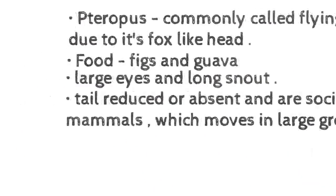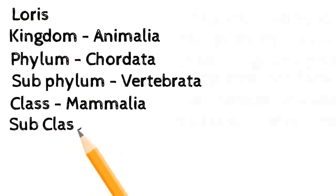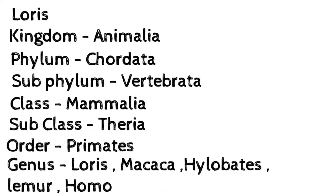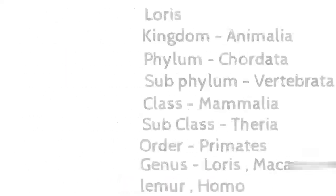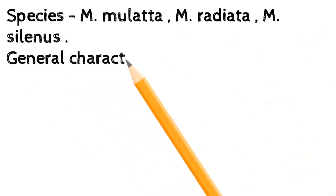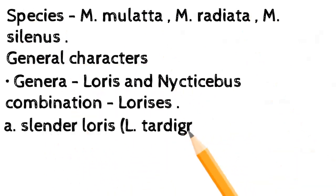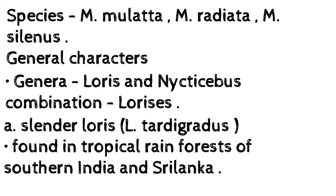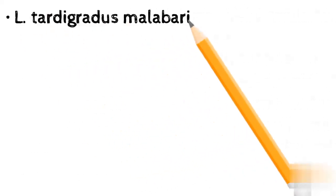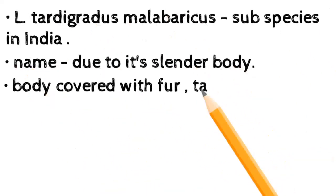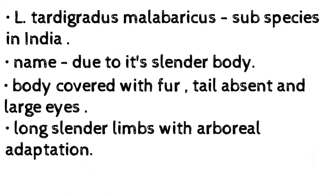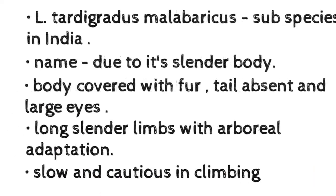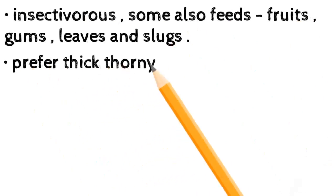Loris — Kingdom: Animalia; Phylum: Chordata; Sub-phylum: Vertebrata; Class: Mammalia; Sub-class: Theria; Order: Primates; Genera include Loris, Macaca, Hylobates, Lemur, Homo. Genera Loris and Nycticebus. Slender loris, Loris tardigradus, found in tropical rain forests of southern India and Sri Lanka; subspecies L. t. malabaricus in India. Body covered with fur; tail absent; large eyes; long slender limbs with arboreal adaptation. Slow and cautious in climbing; insectivorous, also feeds on fruits, gums, leaves, and slugs; prefers thick thorny vegetation.